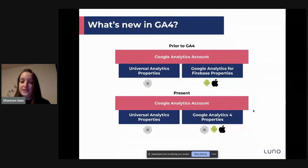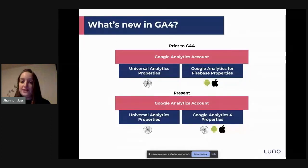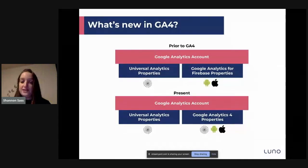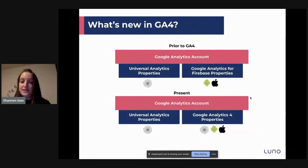You can still have your Universal Analytics property, but going forward, when you create a new property by default it will be Google Analytics 4. This allows you to have all your web and your app data in one place, and you can do roll-up reporting across platforms very easily.